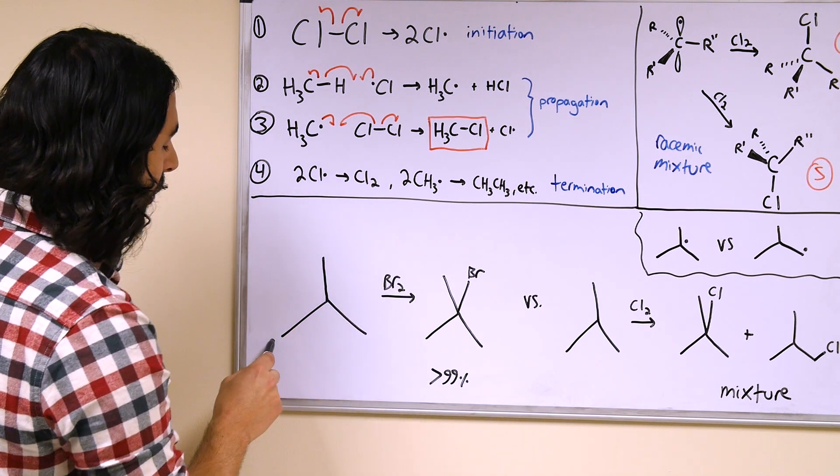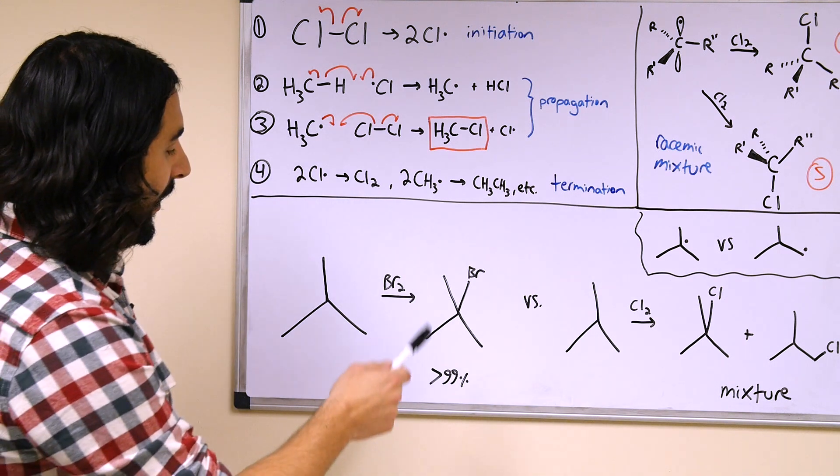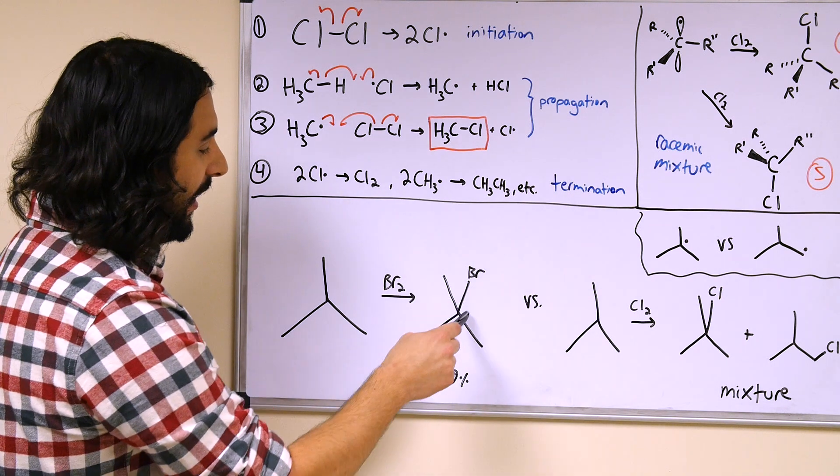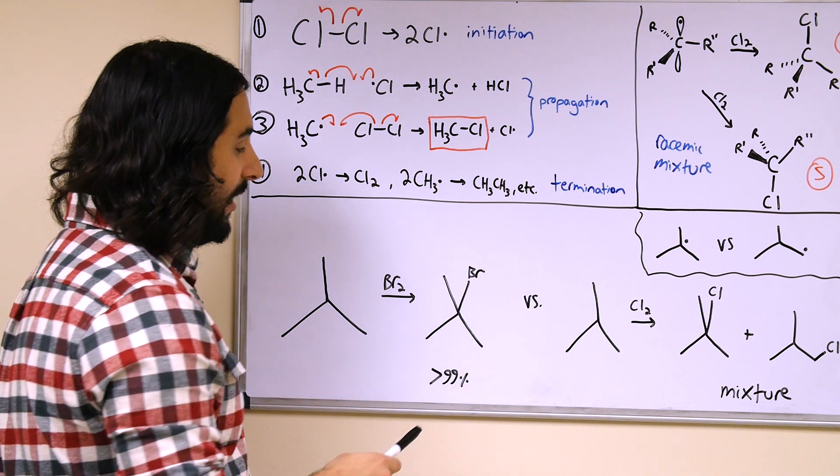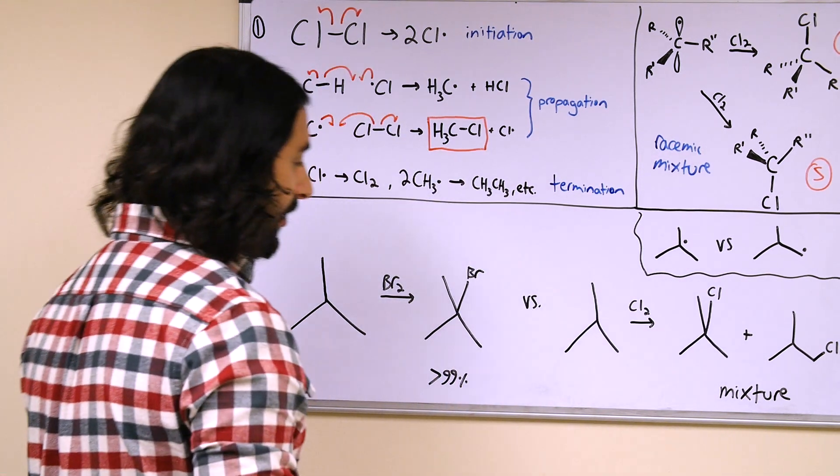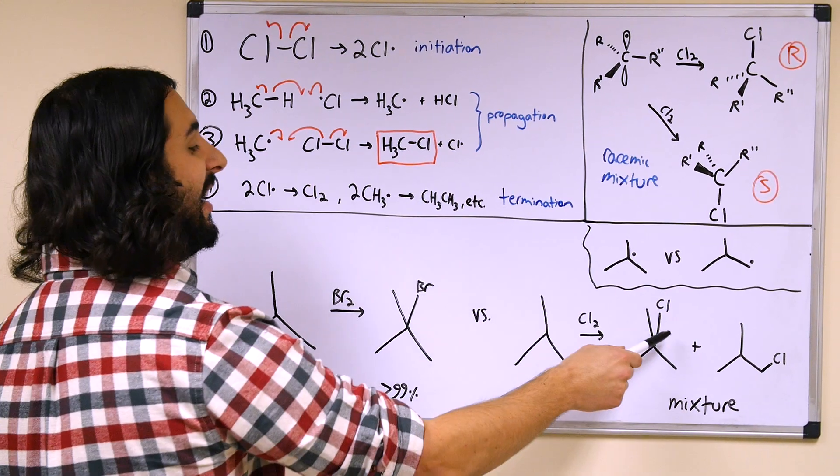As it turns out we get strictly bromination on this location here, so we get the tertiary system. Now chlorination ends up not being so regioselective. We actually get a mixture of the tertiary and the primary chloroalkane.